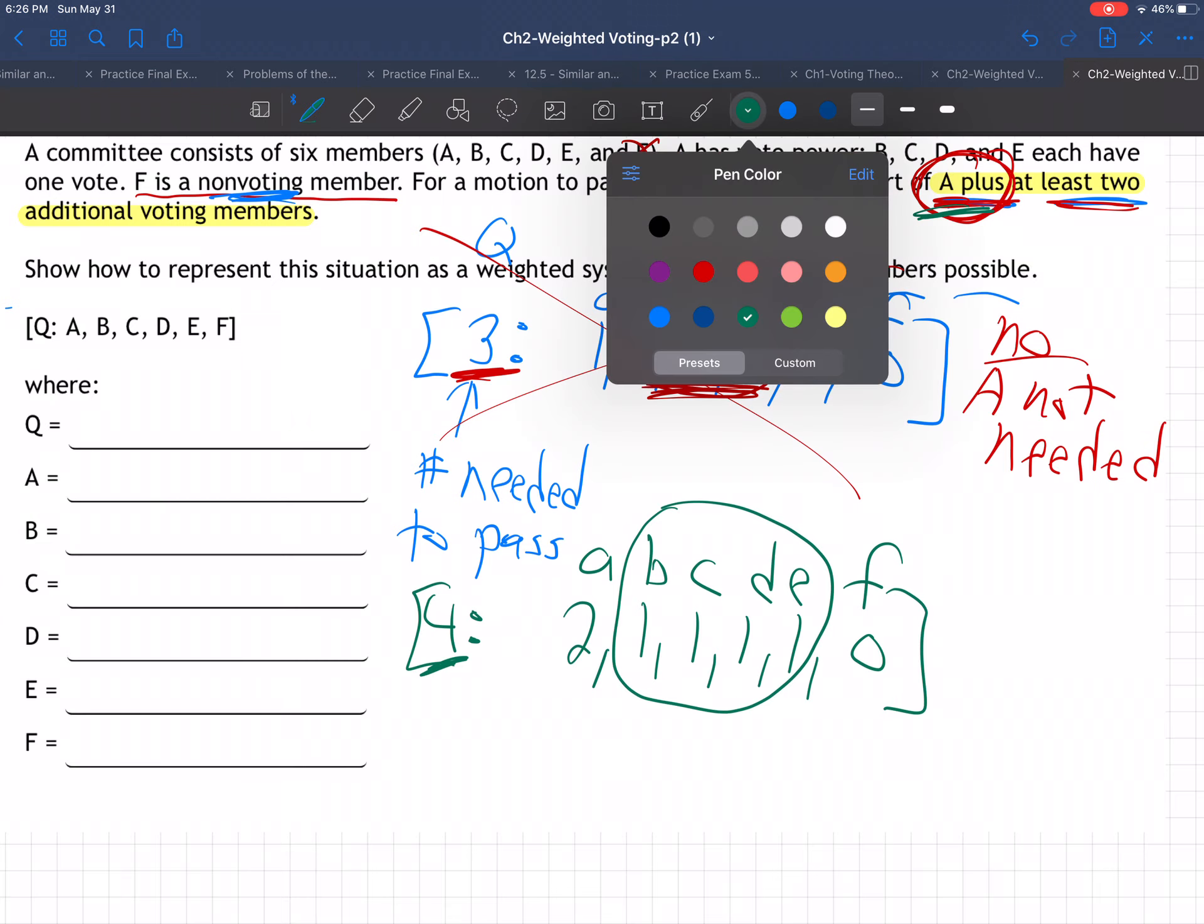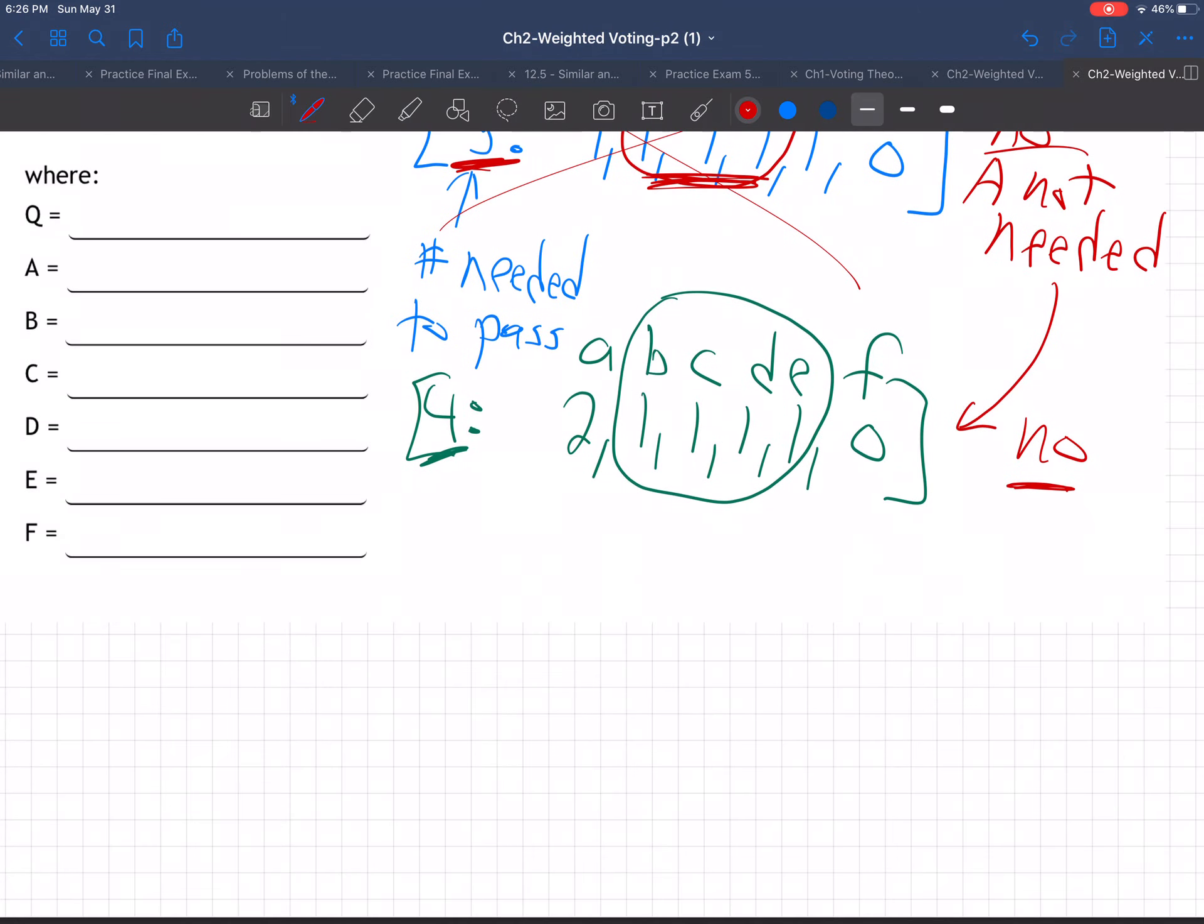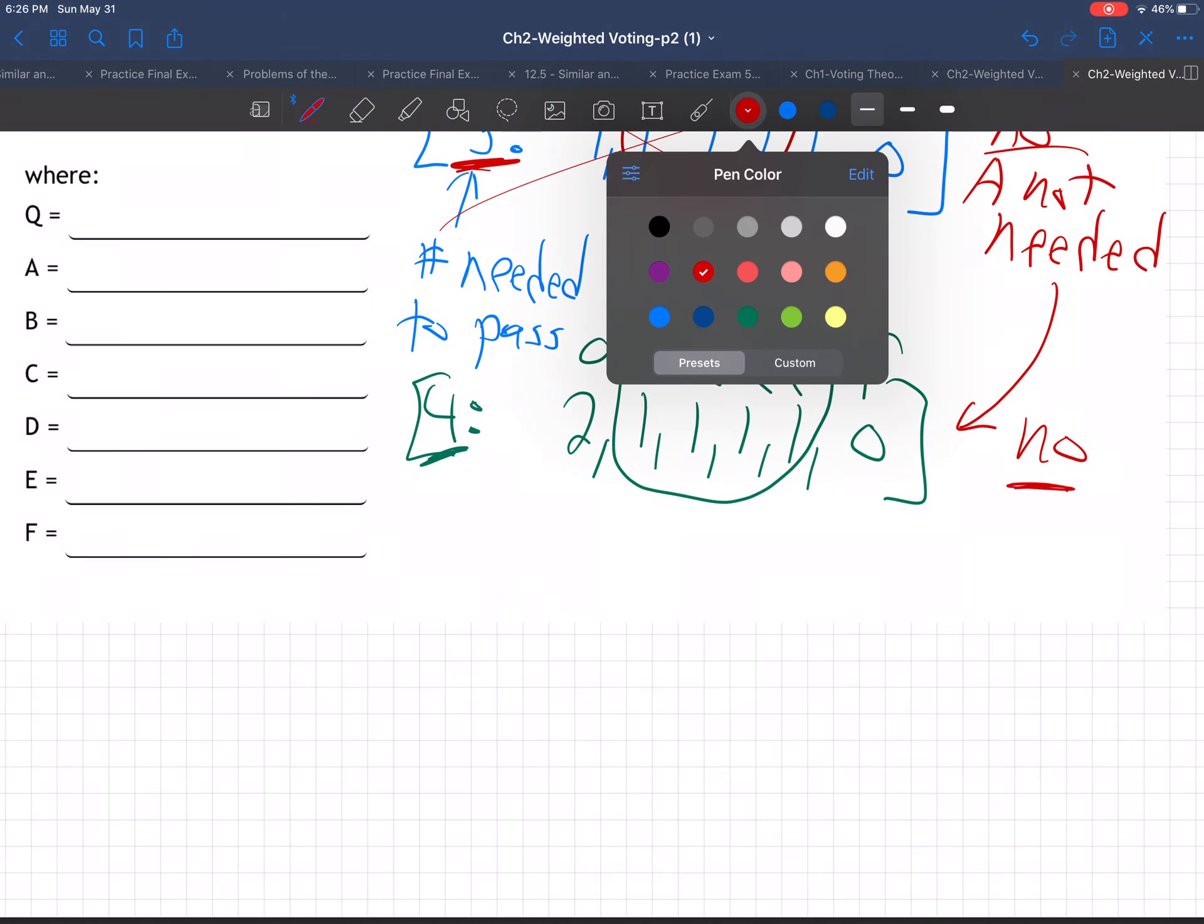This is not going to work for the same reason the other one didn't work. Again, no, A is not needed because you could just have B, C, D, and E all get together without A and pass something. So let's go up again one more time.